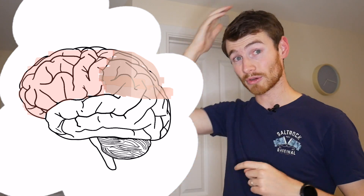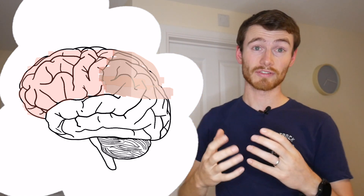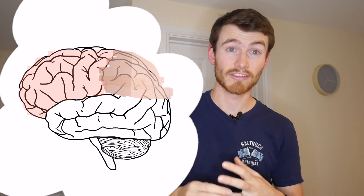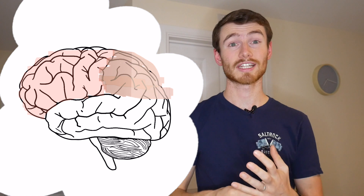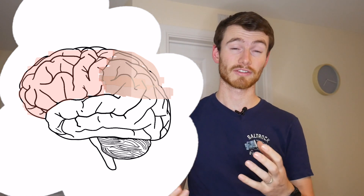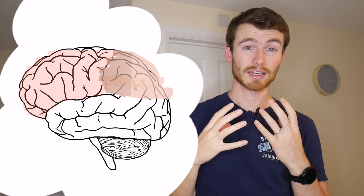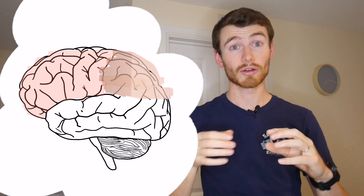As we move further back we've got the parietal lobe, which processes a lot of sensory information — your sensations, things that you touch, things you feel, your taste — that all goes into your parietal lobe.